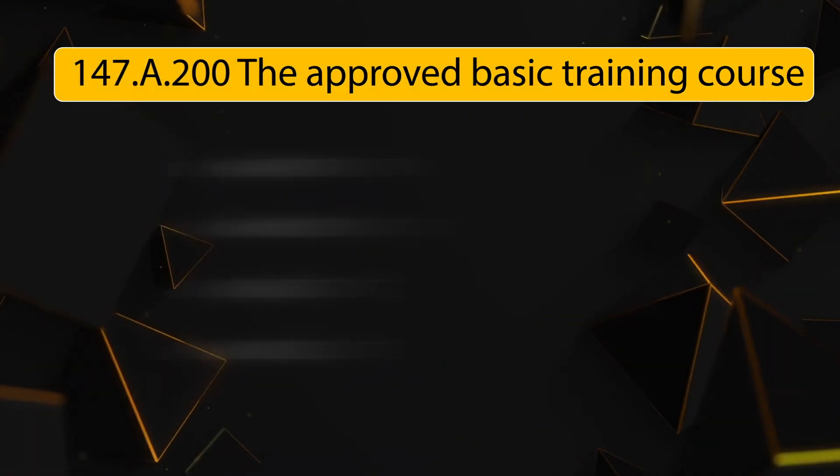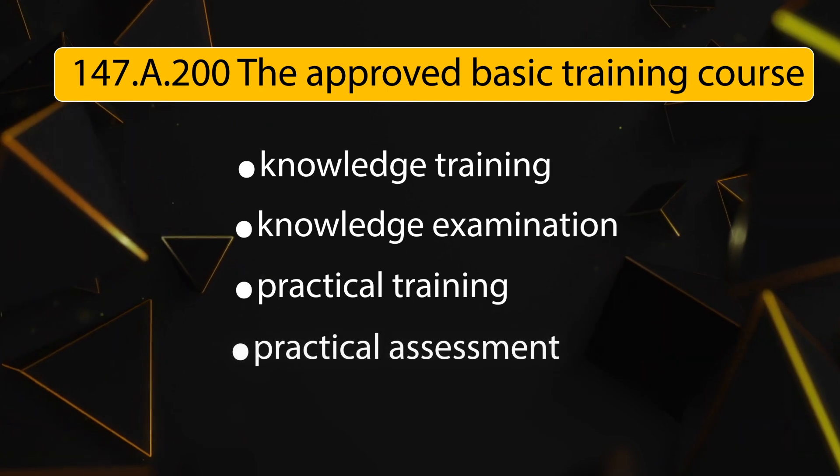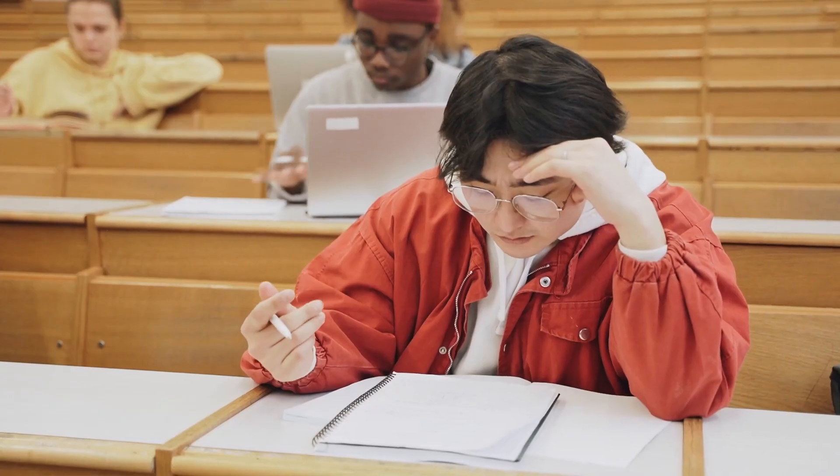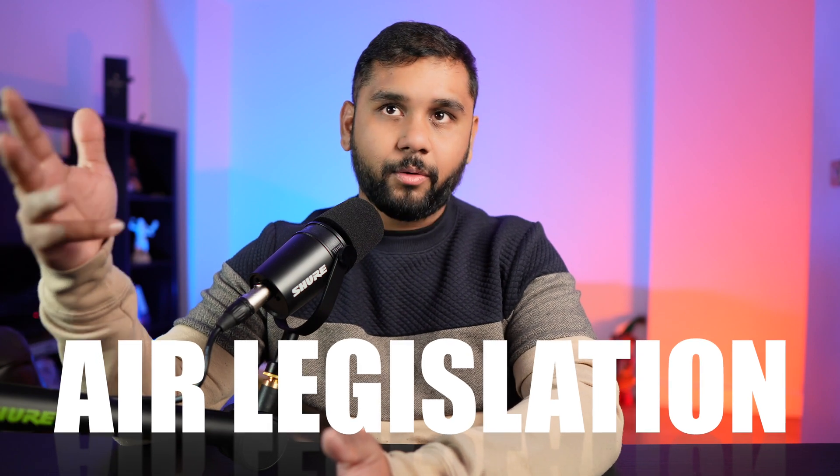Now let's break down approved basic training, which has four elements. Number one is knowledge training — following the Part 66 syllabus for your chosen category, whether B1.1, B2, B1.3, or B1.4. Number two is the knowledge examination — you must pass at 75% or above. These are usually multiple choice, though modules such as Human Factors (Module 9), Air Legislation (Module 10), and Maintenance Practices (Module 7) may include essay questions.